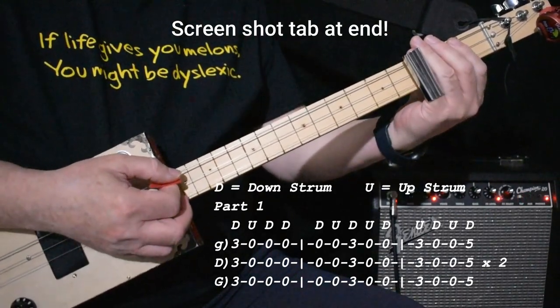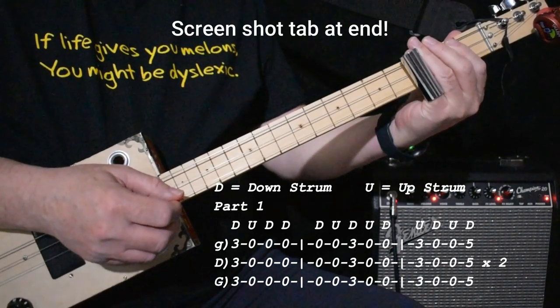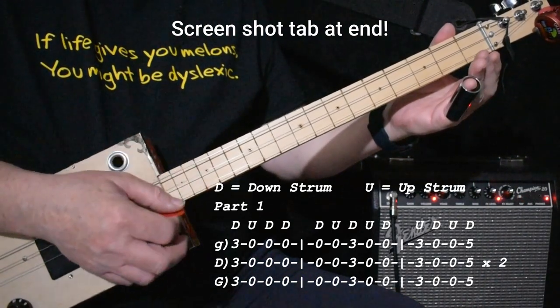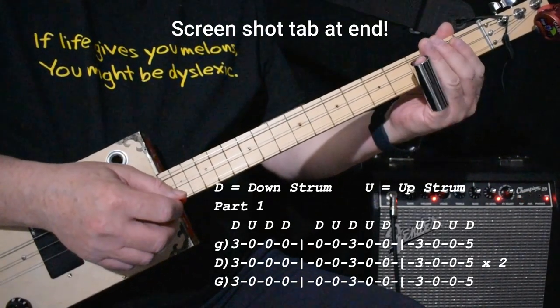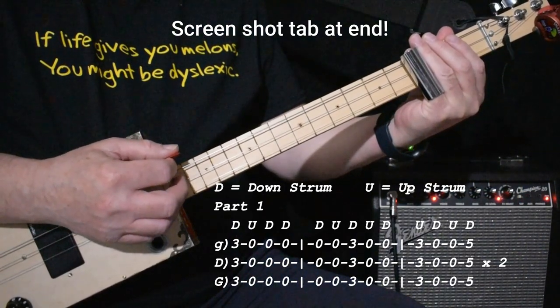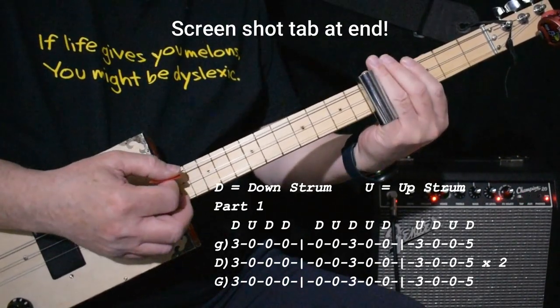And then we have three again, with the down stroke. Then we have the up stroke on the zero, down on the zero, and then up on the three. Then down, on the zero, up, and then down on a five.